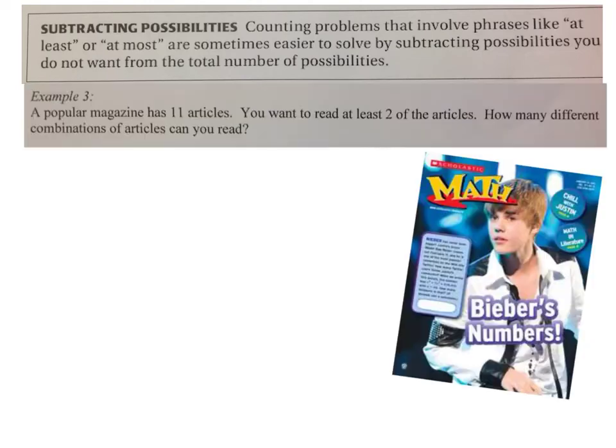For example, a popular magazine like Math Magazine has 11 articles. This has got Justin Bieber on it, so awesome. You want to read at least two of the articles. How many different combinations of articles can you read? So based on the problem we just did, we say, okay, well this is at least 2, so we could read 2, or 3, or 4, or 5, or 6, or 7, or 8, or 9, or 10, or 11, because there's 11 total. You could add up all of those different combinations, or you could just figure out how many combinations there are all together, but then subtract the possibilities for 0 or 1, because those are the only two options you're not going to do. That, to me, sounds easier.